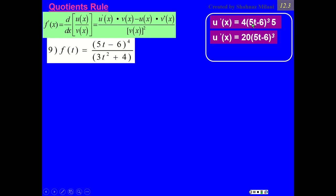Then times derivative of inside the parenthesis, derivative of 5t minus 6 is 5. As we talked about it before, if you can simplify, that means 4 times 5 is going to be 20. This is the derivative of a top.